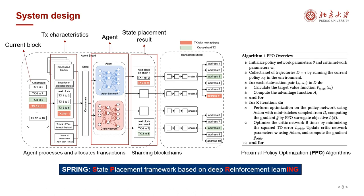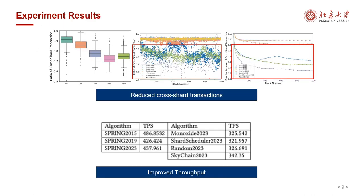To reduce cross-shard transactions while keeping workload balance with RL, we propose a state placement framework based on deep reinforcement learning, also named Spring. In this framework, the agent first processes the current block and then uses the spatial-temporal characteristics of the transaction to make placement decisions and allocates transactions to the sharding blockchains. Finally, it updates its model with the proximal policy optimization algorithm. Experimental results show that our solution minimizes the proportion of cross-shard transactions, and our approach exploits the spatial-temporal properties of transaction data and outperforms other baselines.